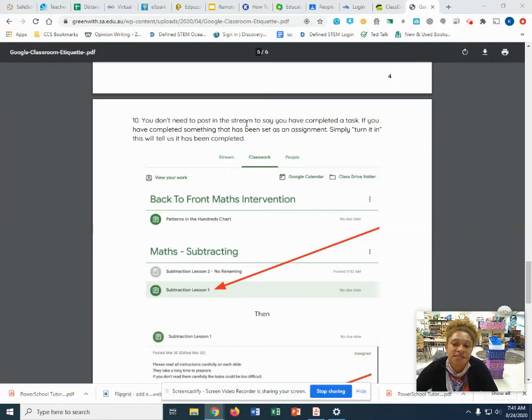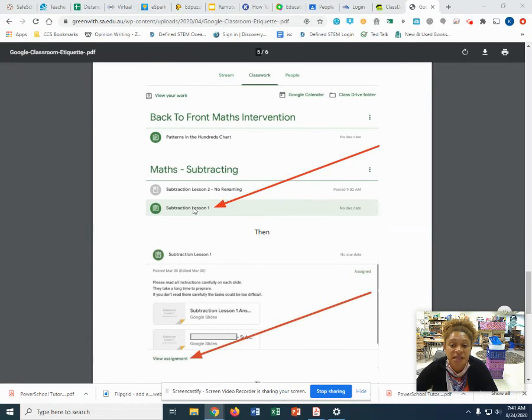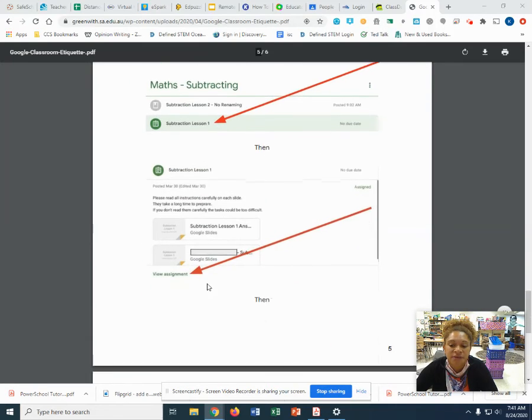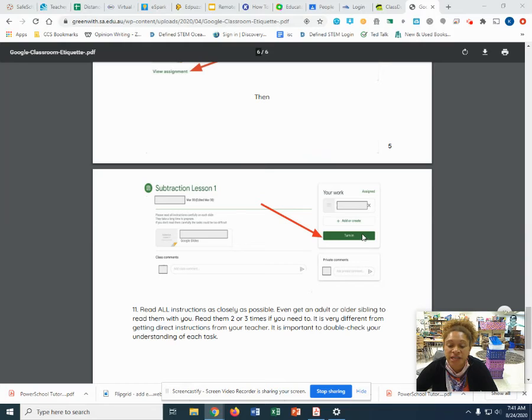You don't need to post in the stream to say you have completed a task. If you completed something that has been set as an assignment, simply turn it in and this will tell us it has been completed. So again, click the assignment, click view assignment, then you'll click turn in. If you need to attach something, you will click add or create right here, and it will let you link the assignment or link the document from your computer.